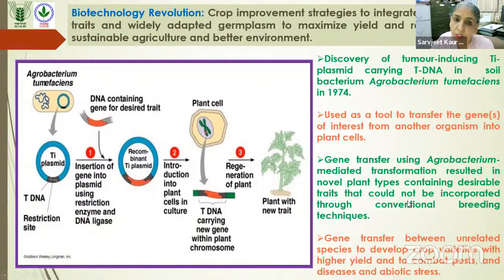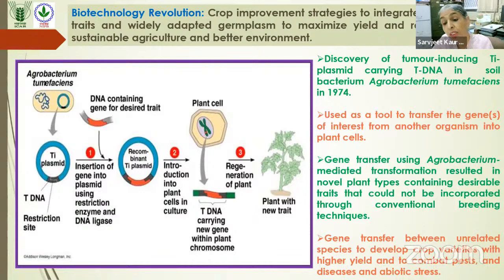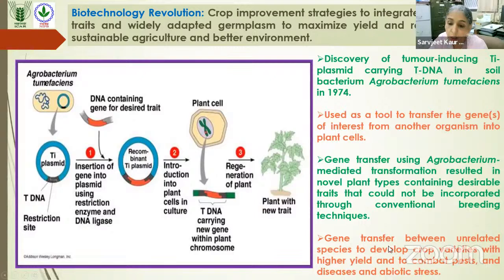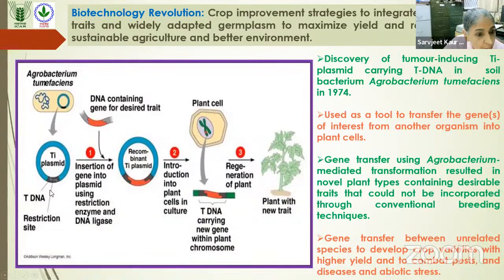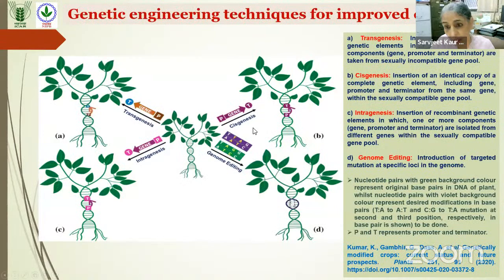Gene transfer using Agrobacterium-mediated transformation resulted in transgenic plant types having the desired gene of interest. In conventional breeding, our limitation is that we can only cross crops that are sexually compatible. Transgenic plants give us the advantage of transferring a gene from a sexually incompatible species into our desired plant. The Ti plasmid is used to make our recombinant plasmid with the gene of interest, which is transferred into plants, and the regenerated plant carries our DNA of interest.